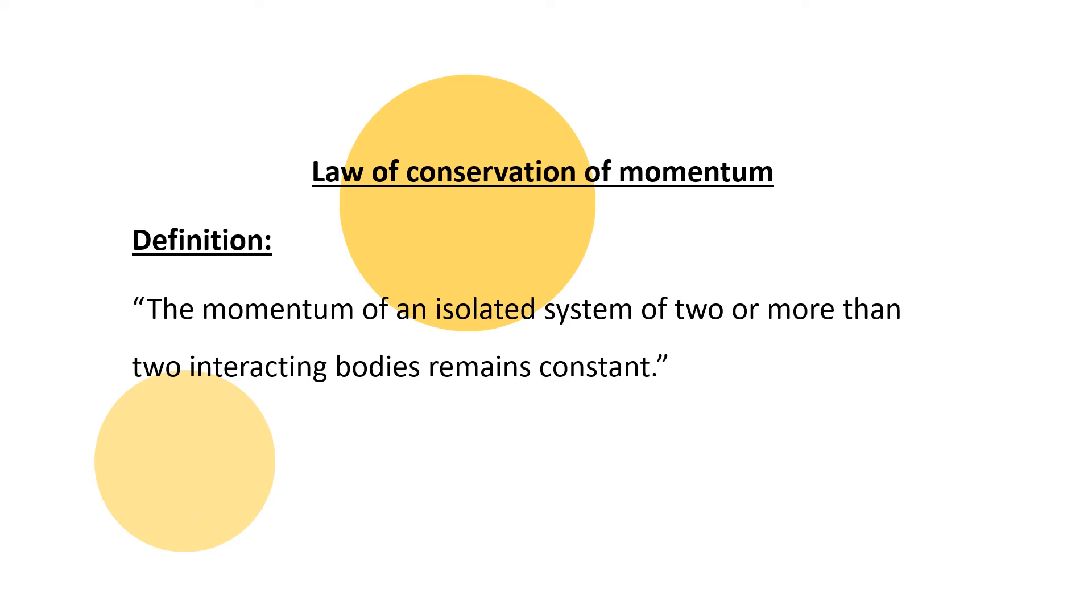The law definition: the momentum of an isolated system of two or more than two interacting bodies remains constant. When we have an isolated system, if the momentum is produced, then objects are more than two, then the momentum remains constant.